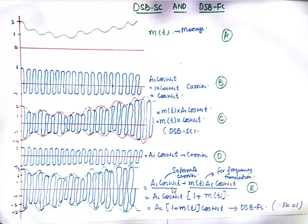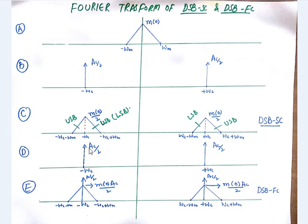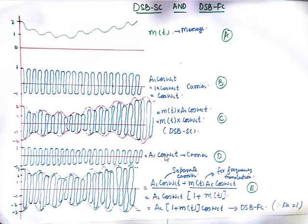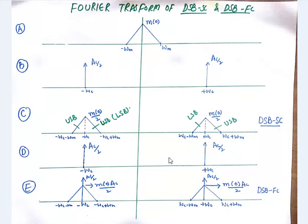This is the general equation. Now if I draw the Fourier spectrum, it will be the same as before, but the only thing added will be the carrier component. Going back, this is the carrier component from wave D: AC·cos(ωct). For a single tone wave, the amplitude will be divided by 2 because cos(ωct) equals (e^(jωct) + e^(-jωct)) / 2. So the amplitude becomes AC/2.